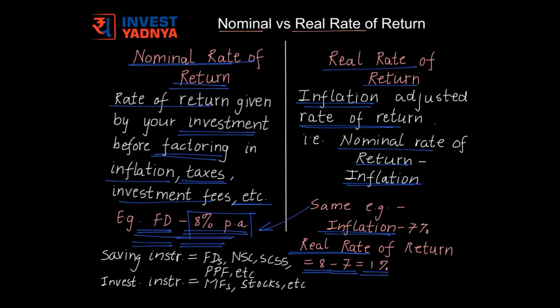The intention of telling you what these two terms mean is to make you look beyond the nominal rate of return and look at the real rate of return of your investments, so that you have a better idea of how much your investment is actually growing. Then you would be in a better position to decide whether to put your money into savings instruments like fixed deposit, national savings certificate, senior citizen saving scheme, PPF, etc., which give returns that just match inflation, or into investment instruments like mutual funds and direct equity that give returns over and above inflation.